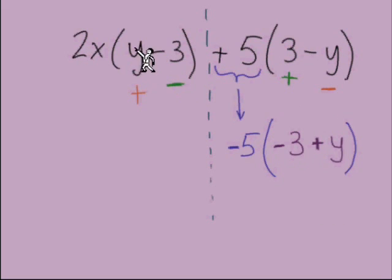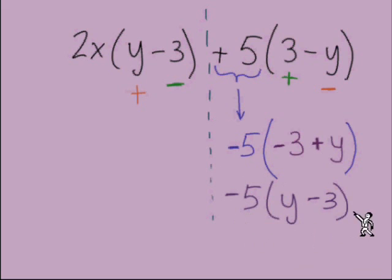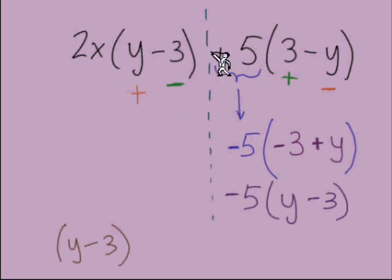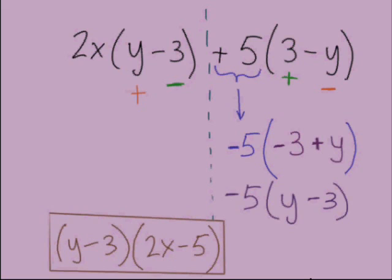We changed the positive 3 to a negative 3 and the negative y to a positive y by changing the GCF from positive 5 to negative 5. Now if we look at what's in parentheses from the first term — positive y and negative 3 — and we rearrange to match the order of the first term, both sets of parentheses show (y minus 3). They match exactly. So (y minus 3) is the GCF. We put it out front, open a new set of parentheses, and drop in the leftovers: 2x from the first term, and negative 5 from the second. Our answer is (y minus 3)(2x minus 5) in factored form.